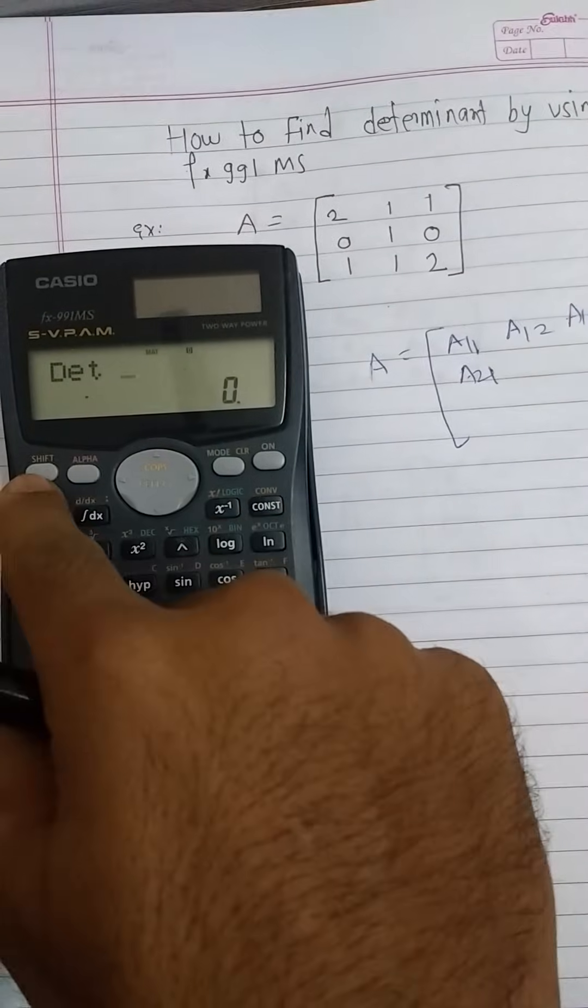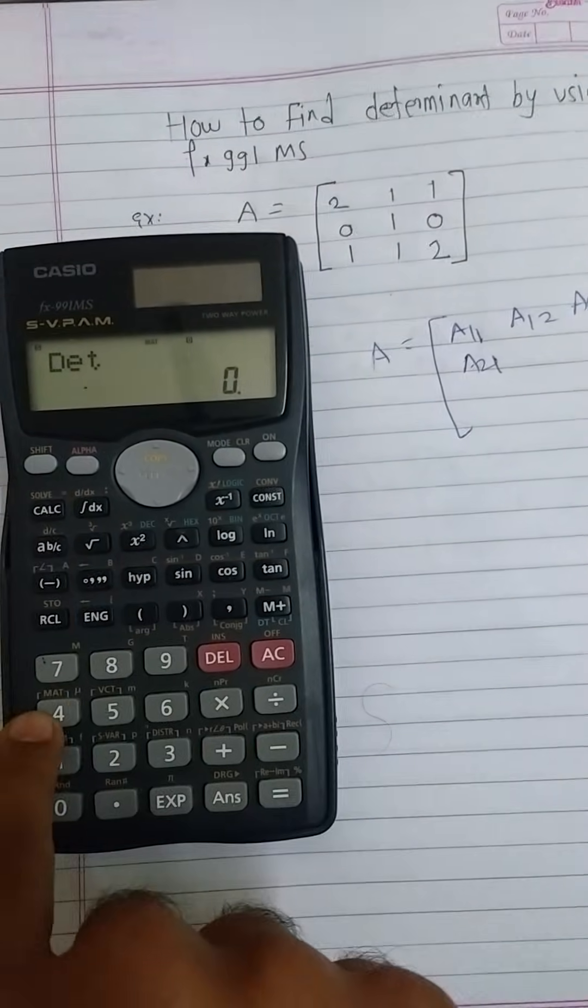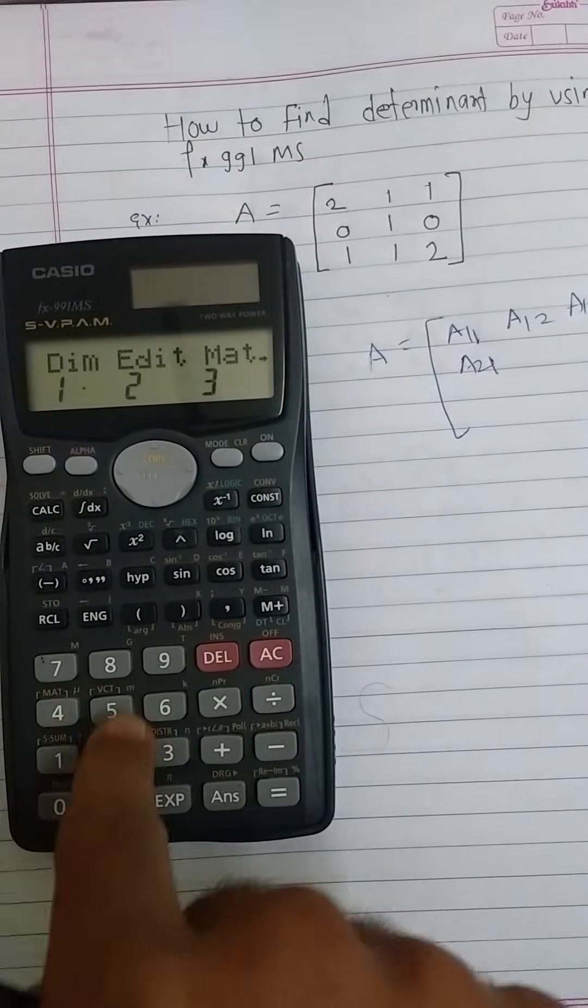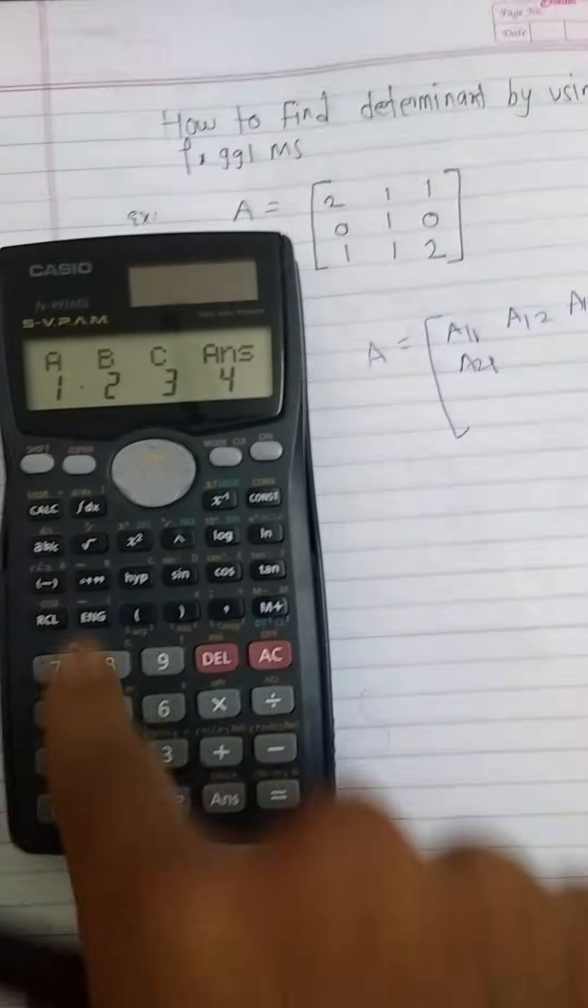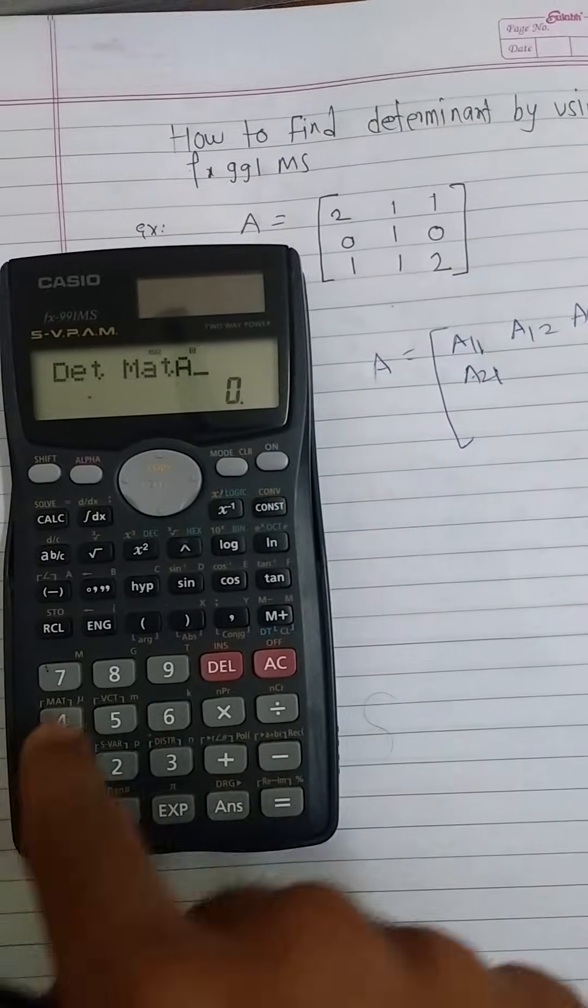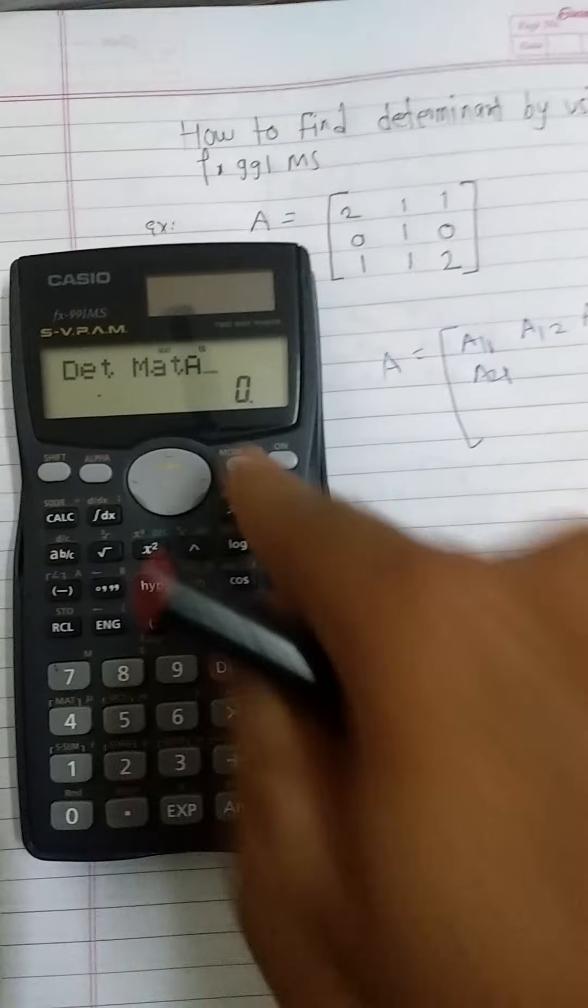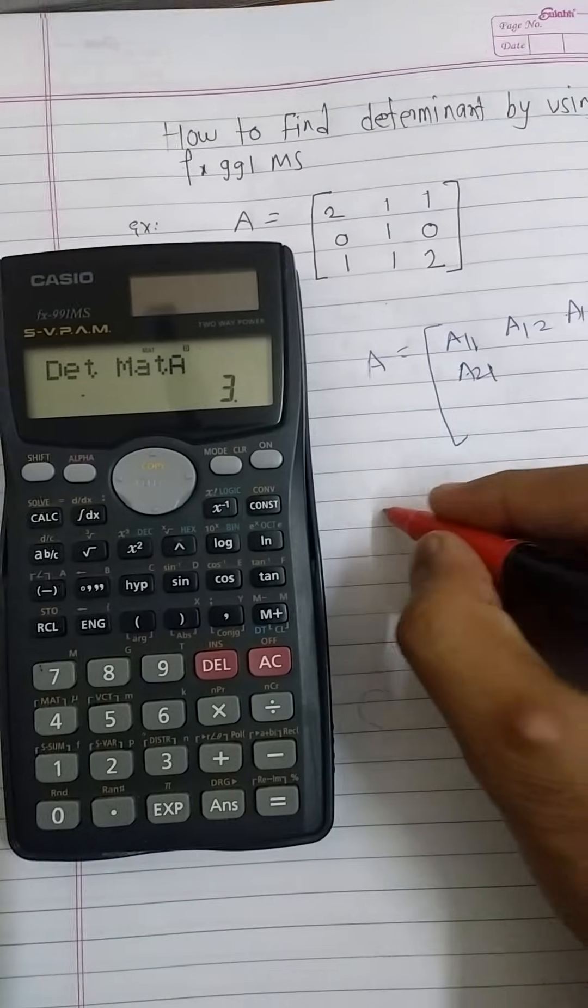We will see DET, that is determinant. Again press shift and 4 to generate matrix A. Press 3, that is matrix, and press 1 for our A matrix. Then we will see determinant of matrix A. Press equal button.